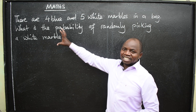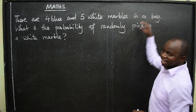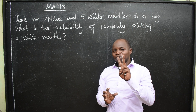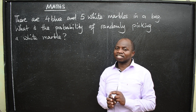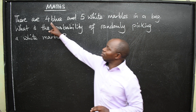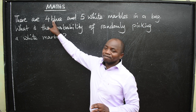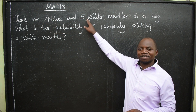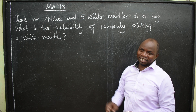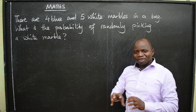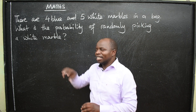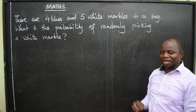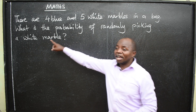We are told that in a bag we have marbles of two different colors. Four of them are blue, five of them are white. Now the question is, what is the probability — the chance of randomly picking a white marble?